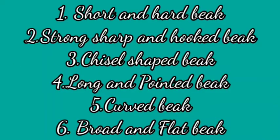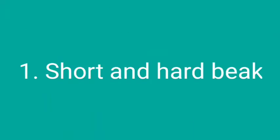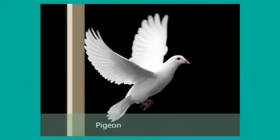The different types of beaks are: first, short and hard beak; second, strong sharp and hooked beak; third, chisel-shaped beak; fourth, long and pointed beak; fifth, curved beak; and sixth, broad and flat beak. Now let us see the birds with different beaks with the help of some pictures and videos. First one: short and hard beak.